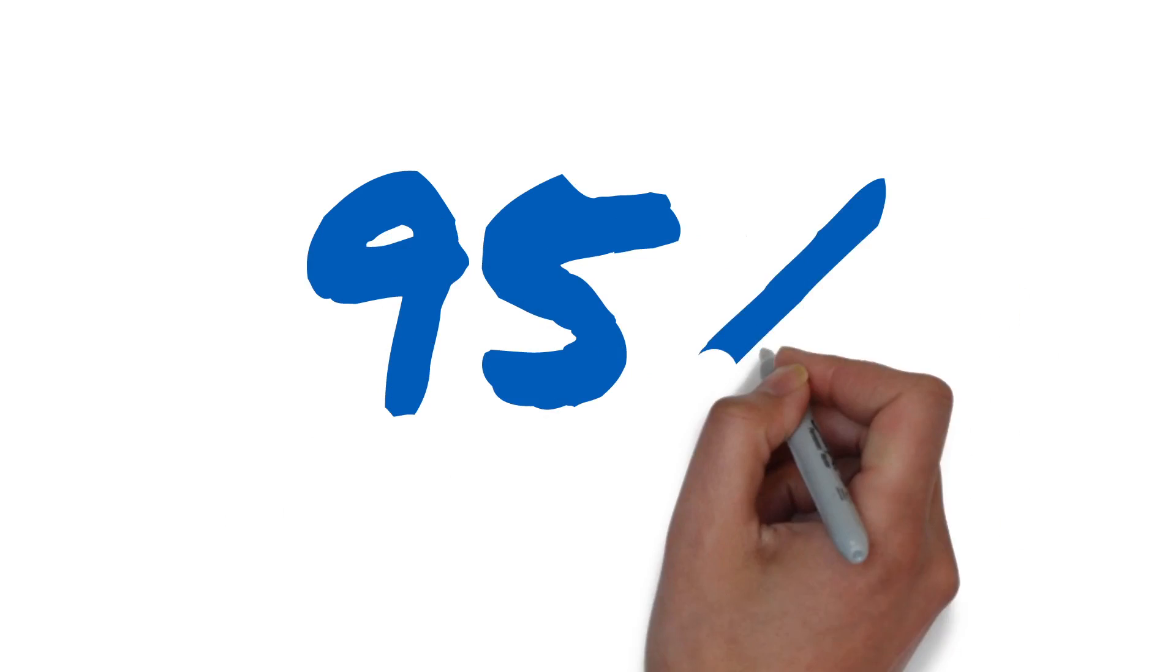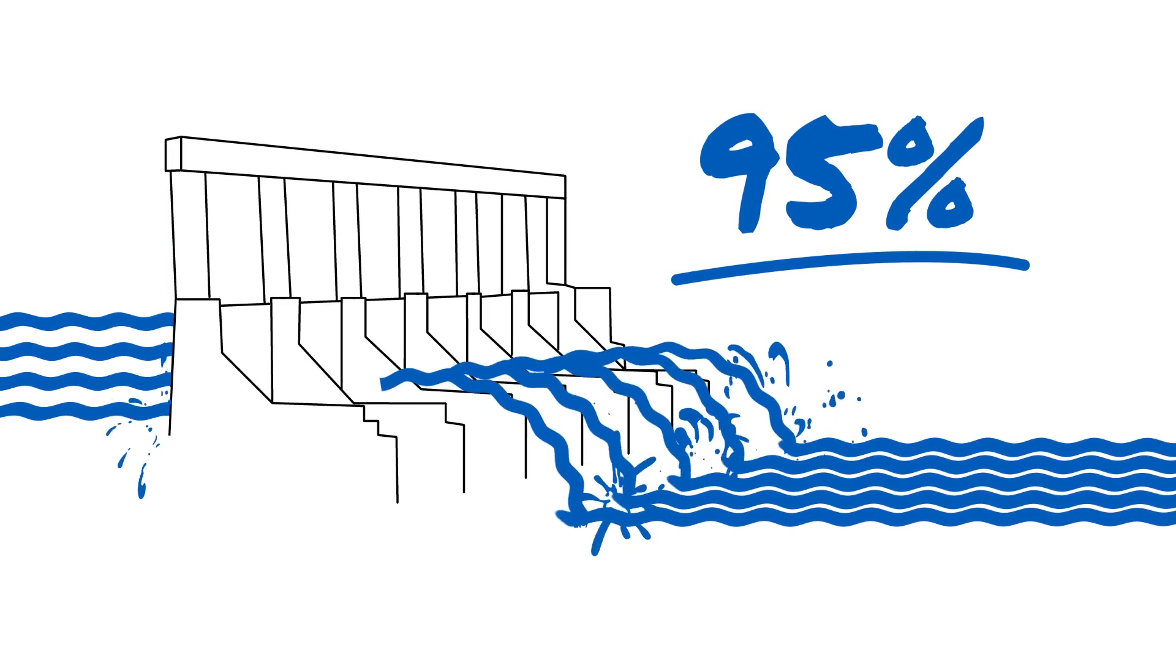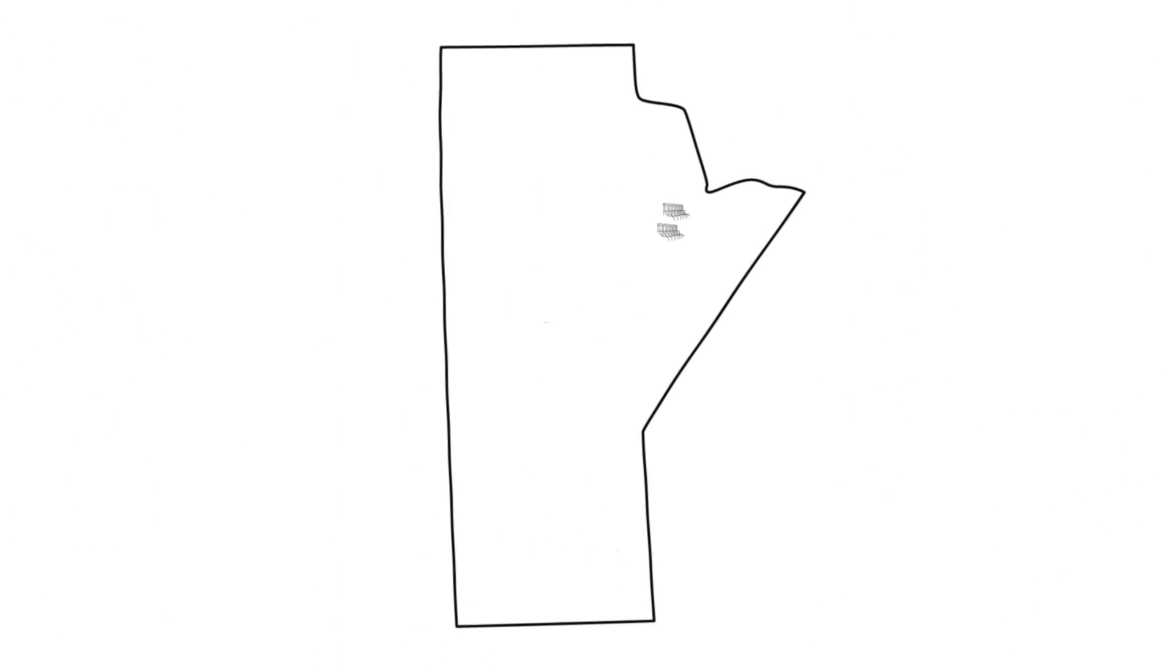Here in Manitoba, over 95% of our electricity is generated using the power of falling water. These generating stations are on rivers located hundreds of kilometers from where most Manitobans live.